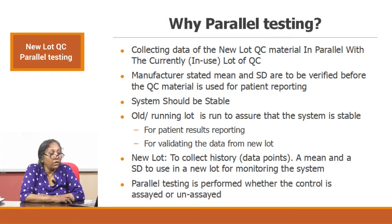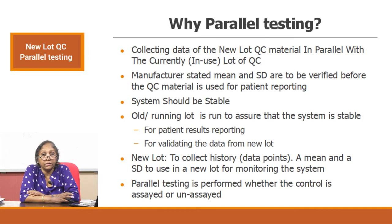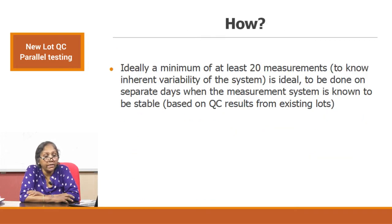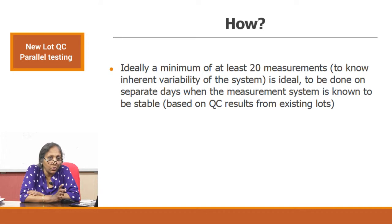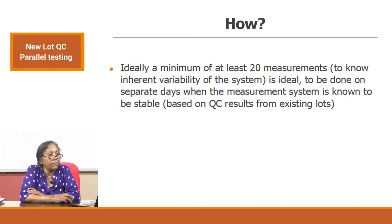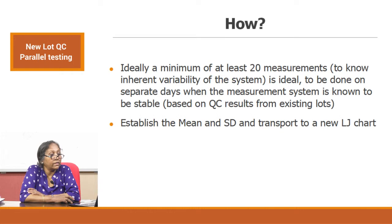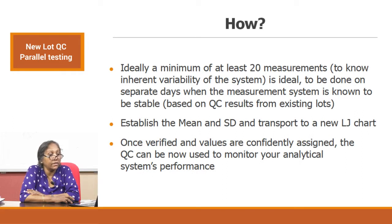Parallel testing is performed whether the control is assayed or unassayed. Assayed controls give you target and range numbers, but it is required that you verify them because there could be errors. Ideally a minimum of 20 measurements should be done to understand the standard dispersion — we already talked about inherent dispersion. It should be done on separate days when the measurement system is known to be stable. Establish the mean and SD, then transfer it to the Levey-Jennings chart. Once verified, the values are confidently assigned and the QC can be used to monitor your analytical system.